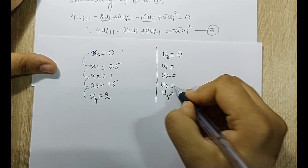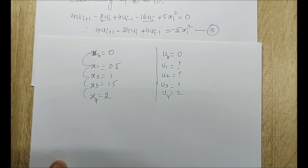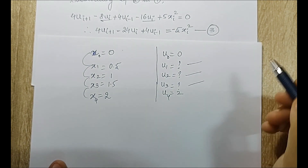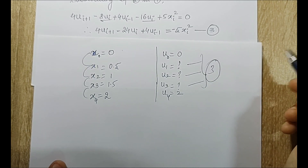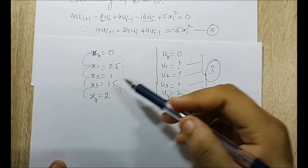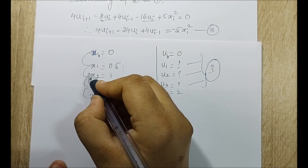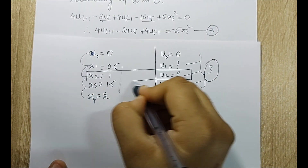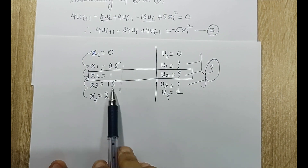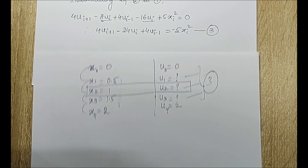The values u₀ and u₄ are known from the boundary conditions; u₁, u₂, and u₃ are unknowns, so I need three iterations. The midpoint is at x₂ = 1, so the main answer we want to verify against the exact solution is u₂.